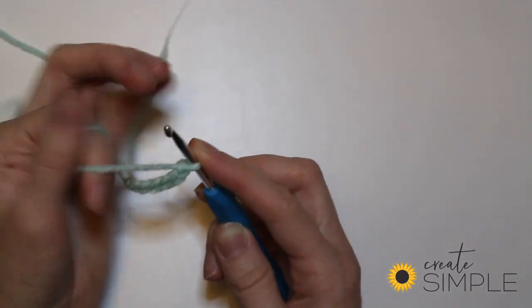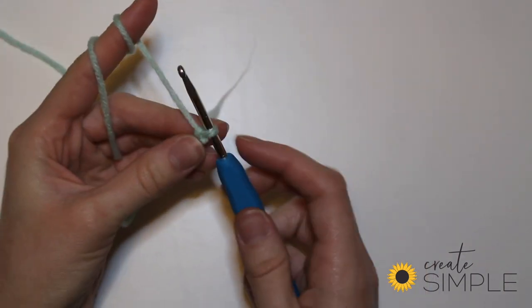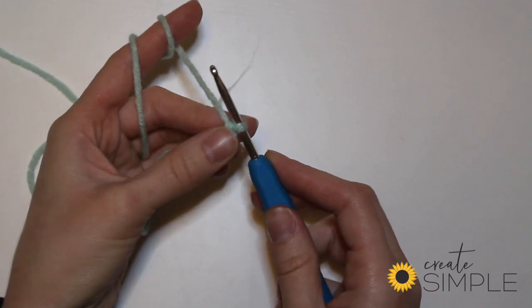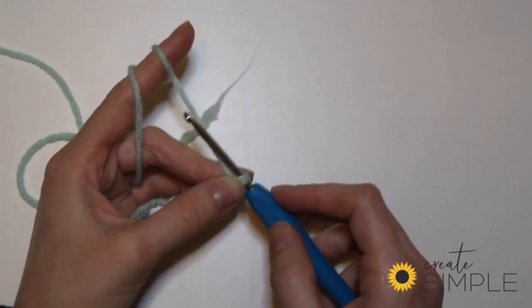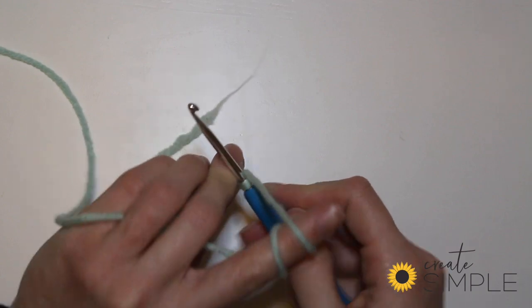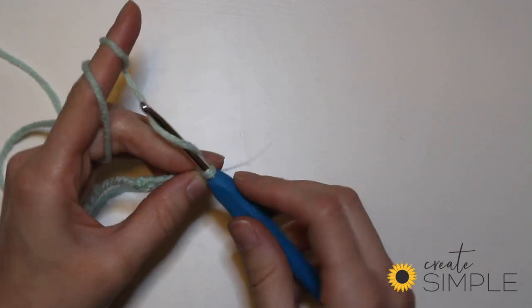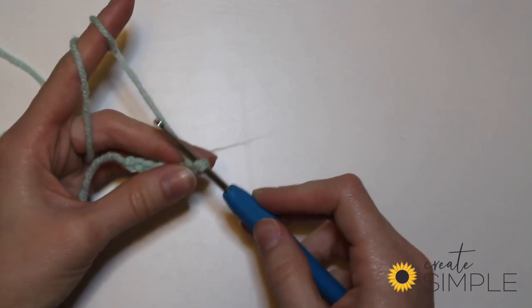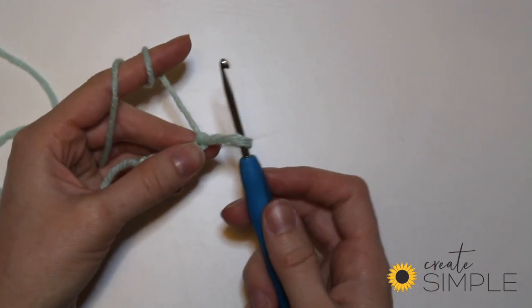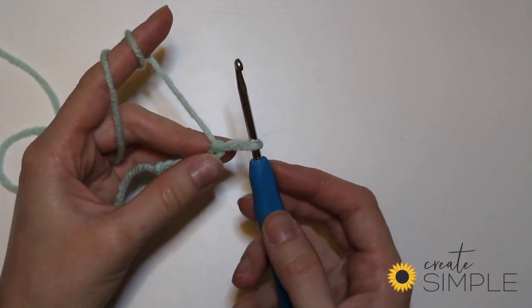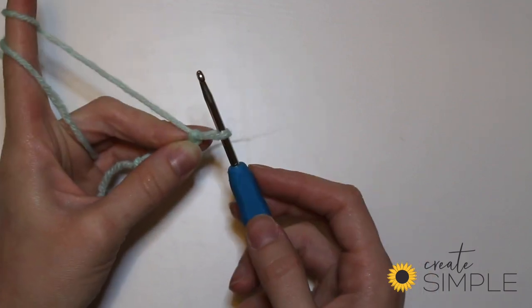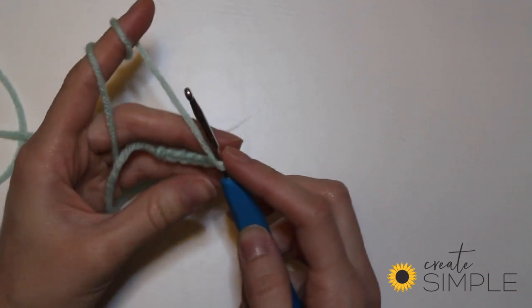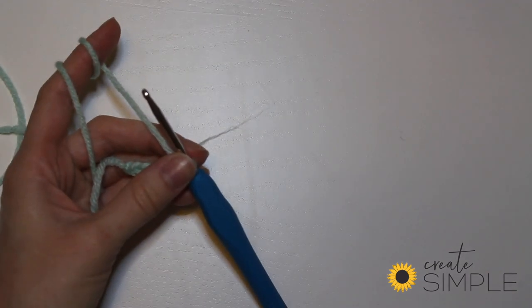We'll just do a couple more here. We've got to hold with our left hand of our foundation chain now. Our right hand is moving, our left hand doesn't move. Sometimes people try and do this and they get themselves confused. Again, if this gets really loose, that's okay. It's super easy. You just pull back like this. That's the nice thing about crocheting—if you mess up, it's pretty easy to undo your work.